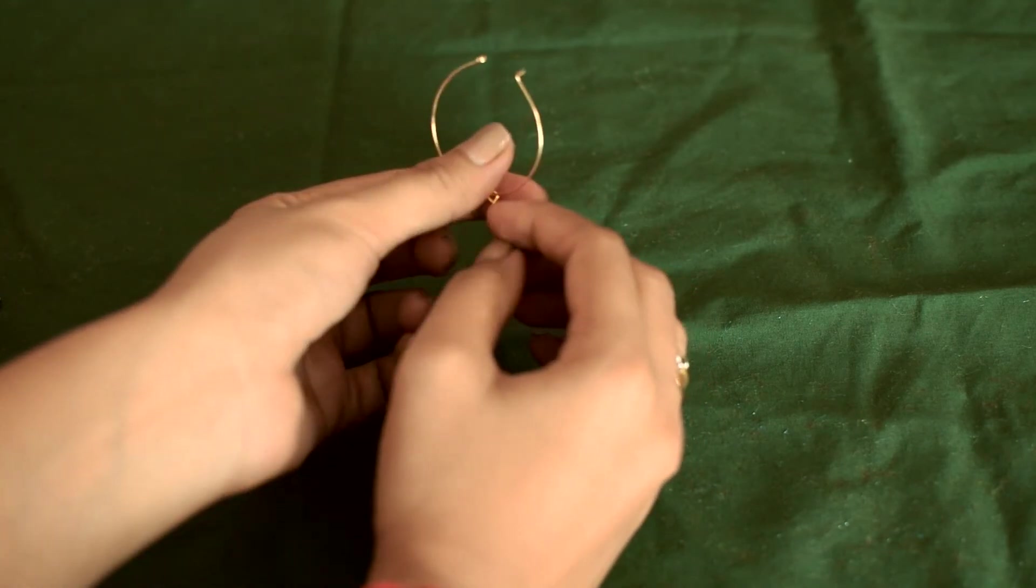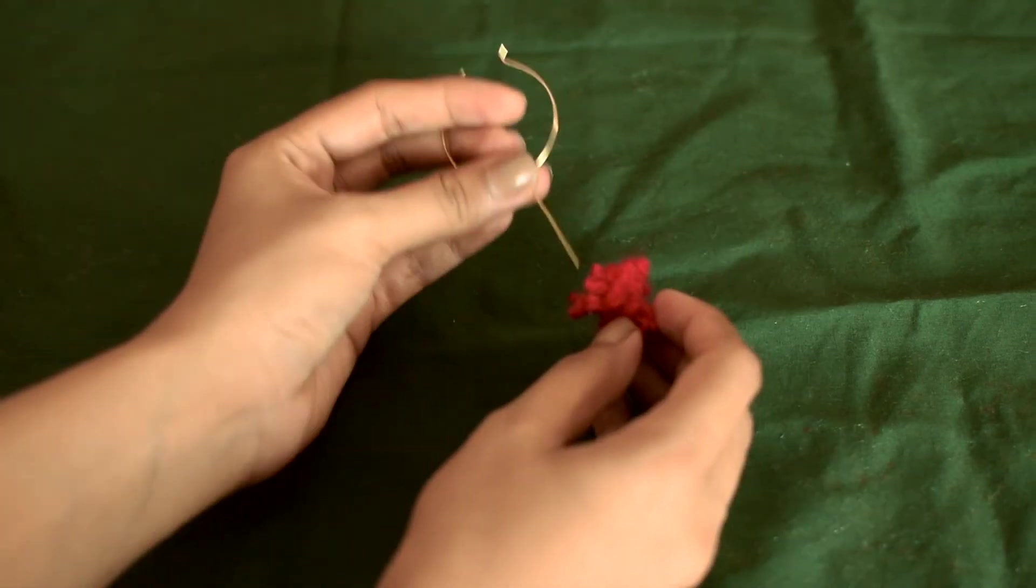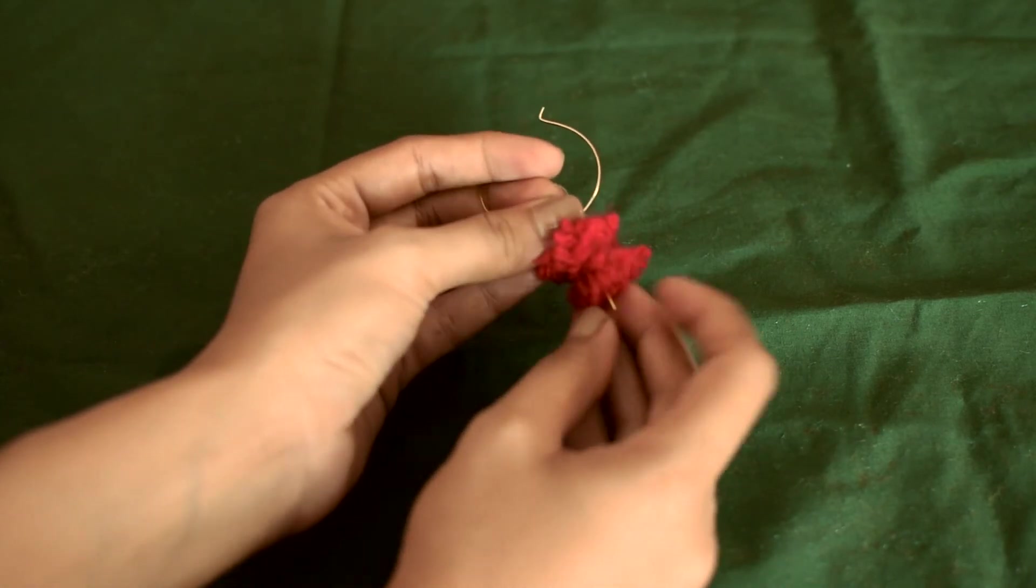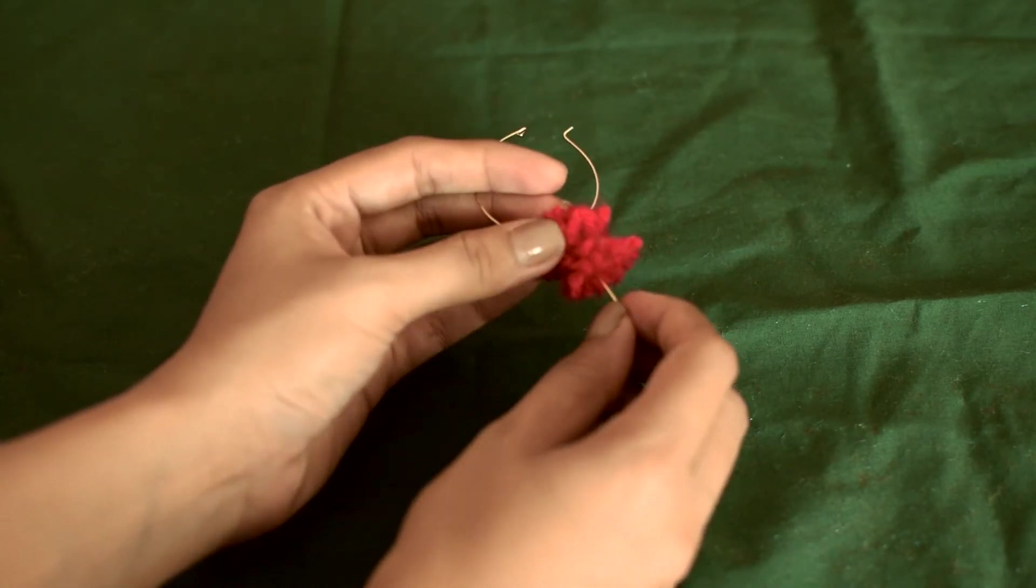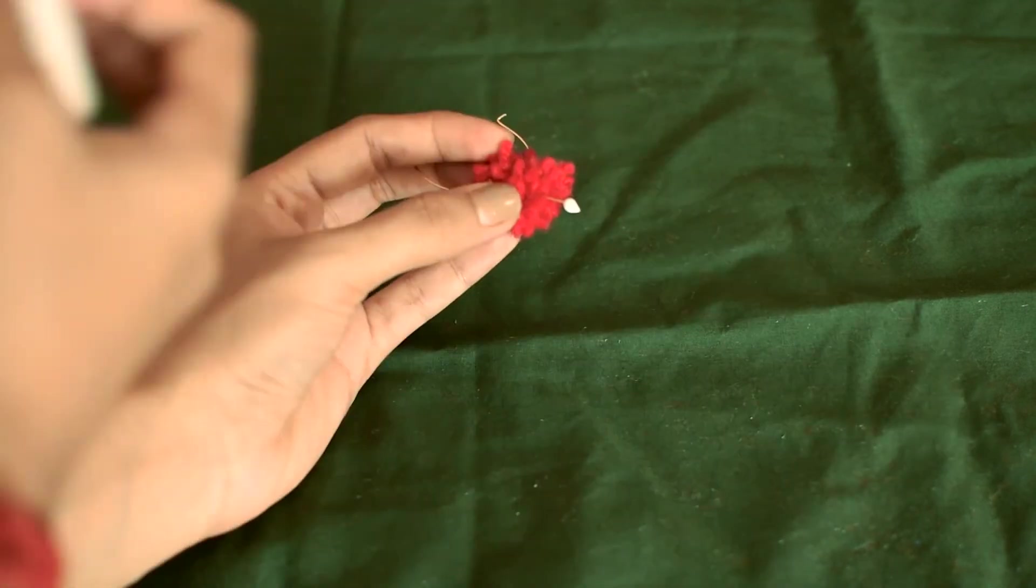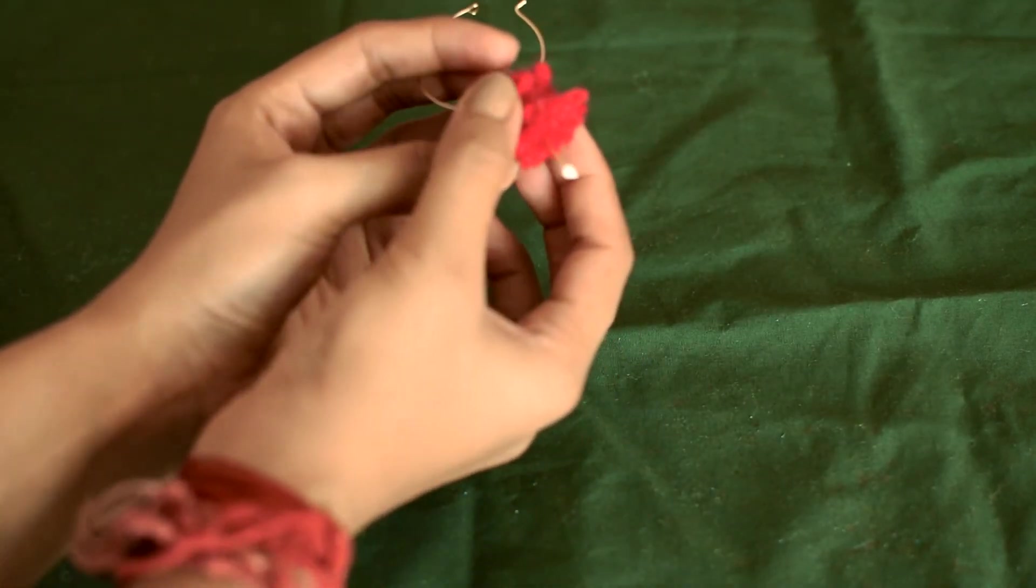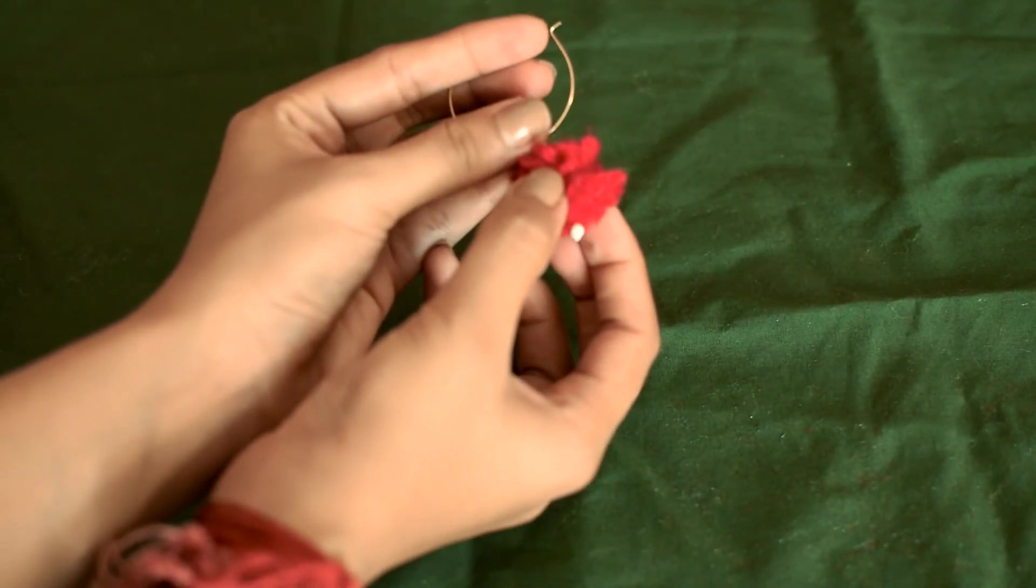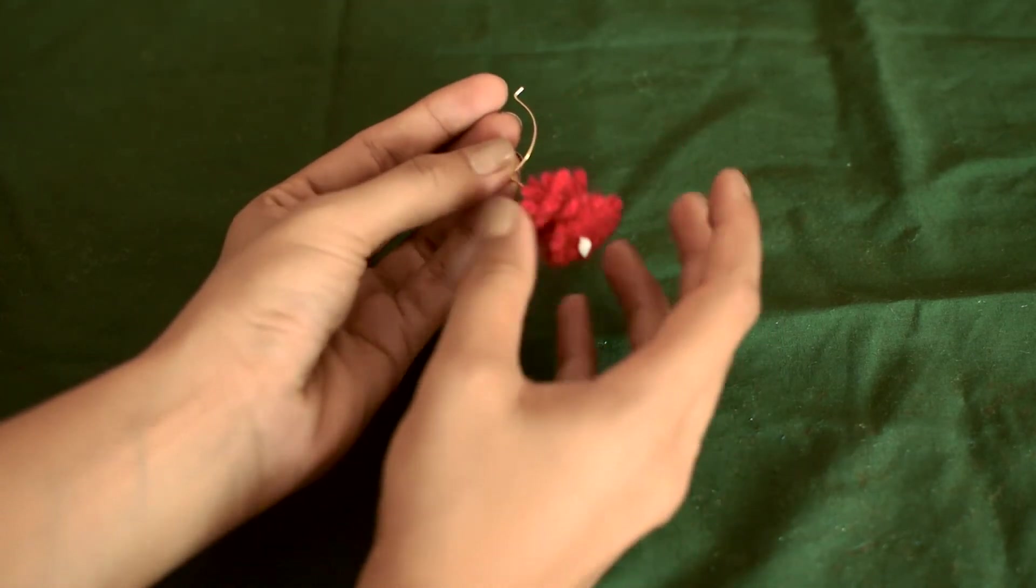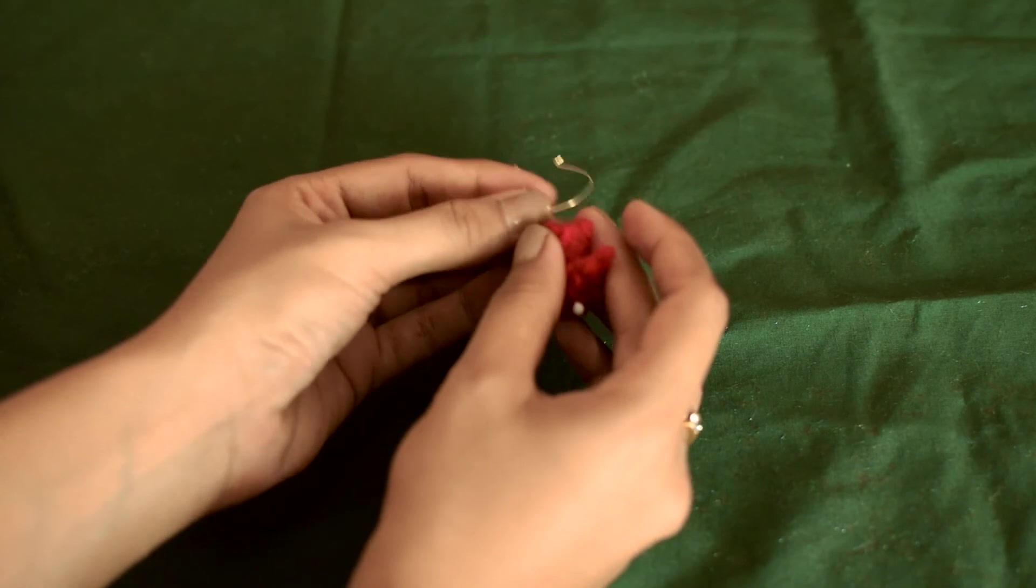I'm going to insert my pom-pom through the eye pin and push it till the very end. Then I'm dabbing some fabric glue on the edge and pulling my pom-pom to the end or till the desired length I want, and blending the fabric glue to the pom-pom.